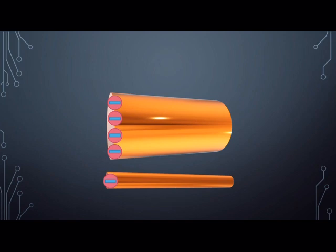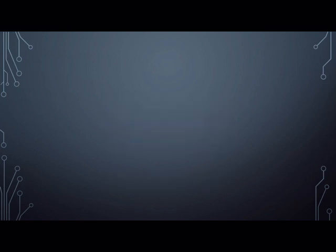Greater the cross section area, more the amount of current that can flow through. And hence, resistance is inversely proportional to cross section area.